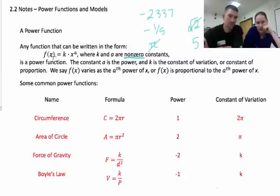So the thing is, is that we have it set up like this: f(x) equals k times x to the a, where k and a are non-zero constants, because if k was zero, then this would just be zero. We know zero times anything is zero. And we call a the power. Okay? We're used to that kind of notation.